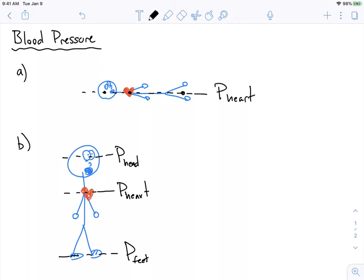The main thing to keep in mind is that the pressure in my head is equal to P heart minus—P heart has a higher pressure than the pressure in my head. So I'm going to call this h1: ρgh1.